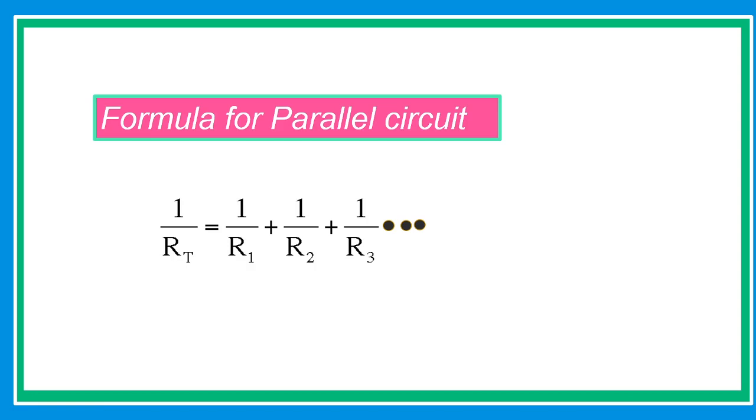And this is the formula of parallel circuit: 1 over Rt equals 1 over R1 plus 1 over R2 plus 1 over R3 and so on.